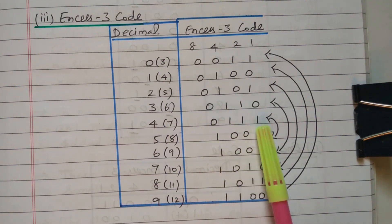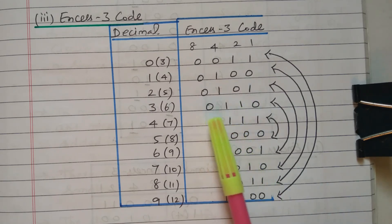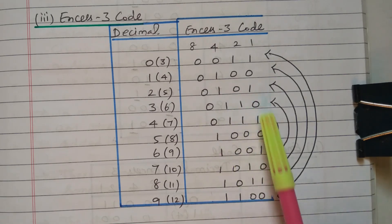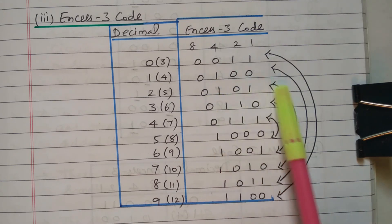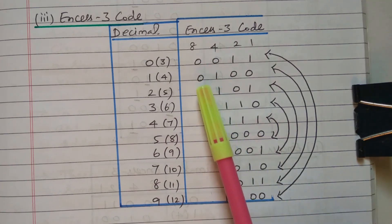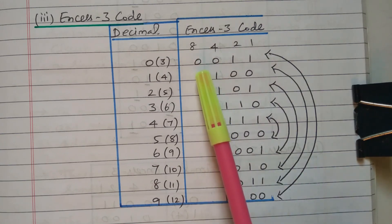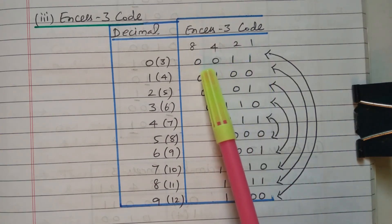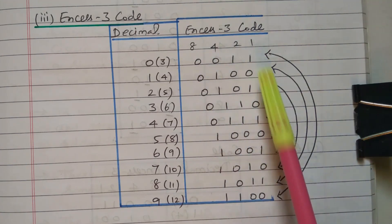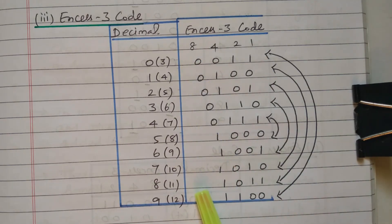Now we verify the reflective property of XS3. Decimal 4 (code 0,1,1,1) and decimal 5 (code 1,0,0,0) — both are complement: 4 and 5 reflective. Decimal 3 (code 0,1,1,0) and decimal 6 (code 1,0,0,1) — both are complement: 6 and 9 reflective. Decimal 2 (code 0,1,0,1) and decimal 7 (code 1,0,1,0) — complement: 5 and 10 reflective. Decimal 1 (code 0,0,1,1) and decimal 8 (code 1,1,0,0) — complement: 4 and 11 reflective. Decimal 0 (code 0,0,1,1) and decimal 9 (code 1,1,0,0) — complement: 3 and 12 are complement. So that is called a reflective code.